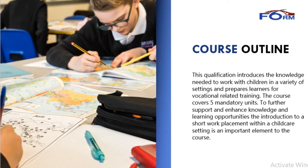This qualification introduces the students to the knowledge needed to work with children and young adults in a variety of settings and prepares them for vocational related training. The course covers five mandatory units where they learn about a child's development, child protection and relevant legislations, how we support children in their development and learning, and how the practitioner ensures that all of these are practiced when working with children.